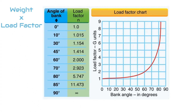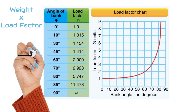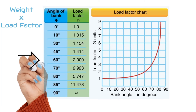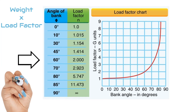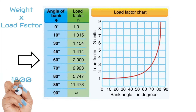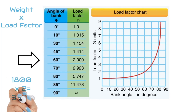For example, the wings of a 1,800-pound airplane in a 60-degree bank — you would multiply 1,800 times 2.0, giving you a load factor of 3,600.